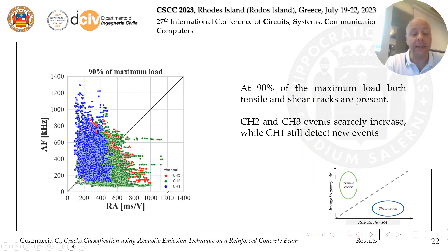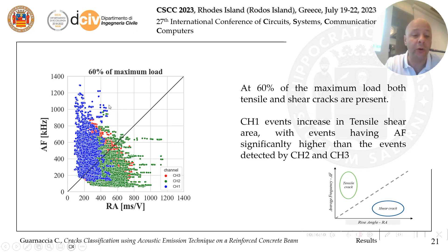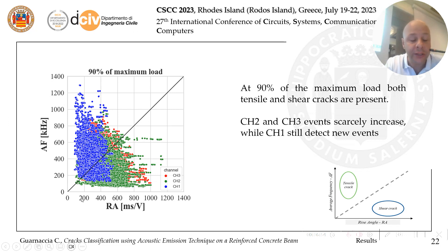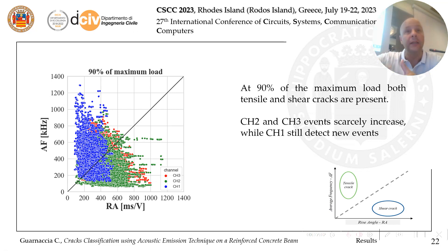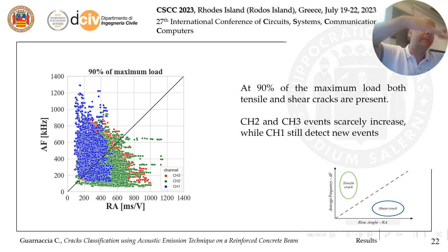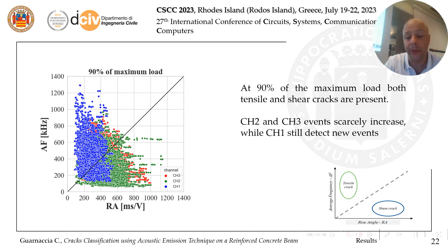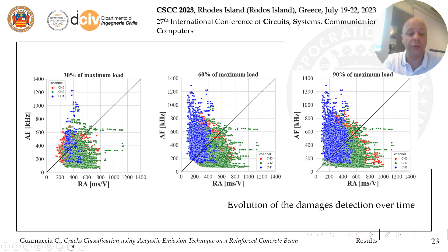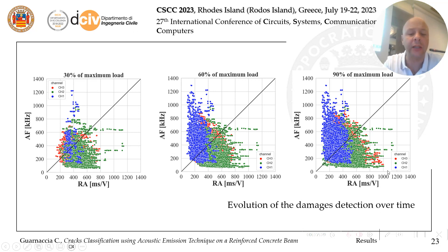At 90% of maximum load, confirming what was mentioned before: there is an increasing number of hits in both crack types. At the end of the test you have shear cracks on the sides where the momentum decreases, and at the very end, compression cracks come from the bending of the beam as the top concrete starts to compress and spall. This resume shows the evolution of damage over time as a function of the percentage of maximum load, confirming that channel 1 does not detect many shear cracks because of the asymmetry.